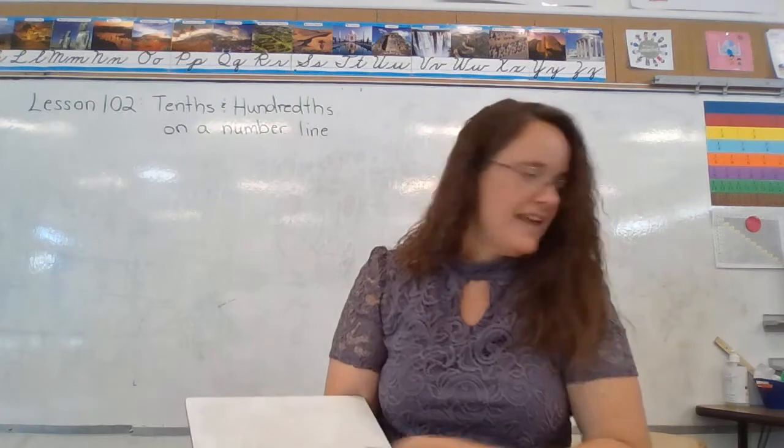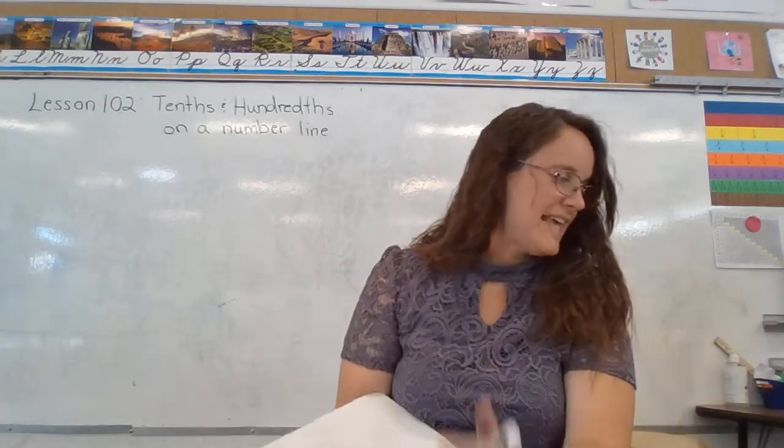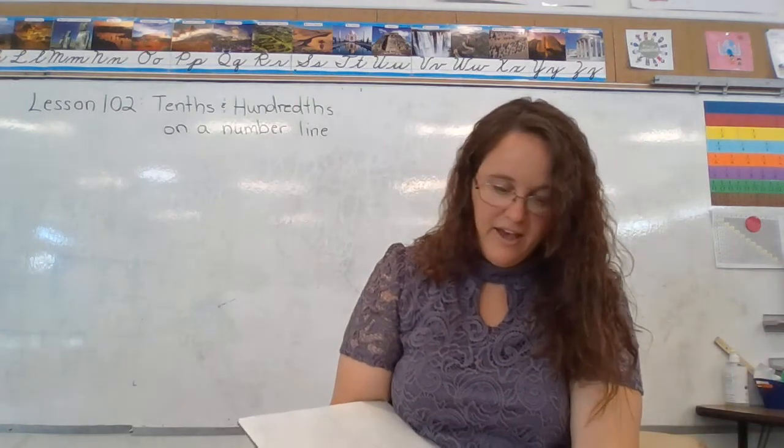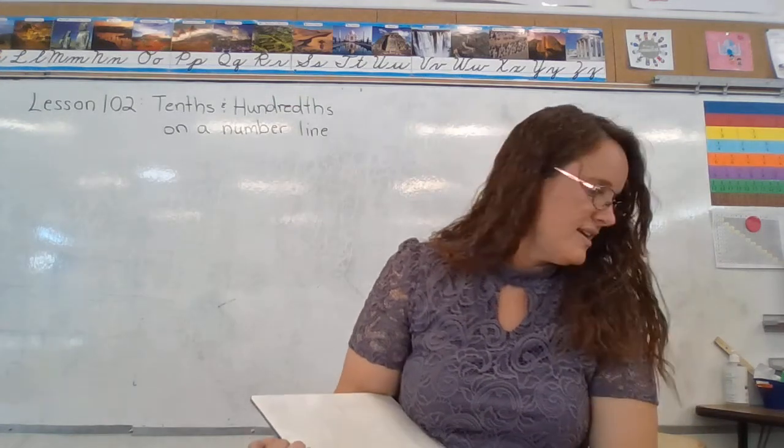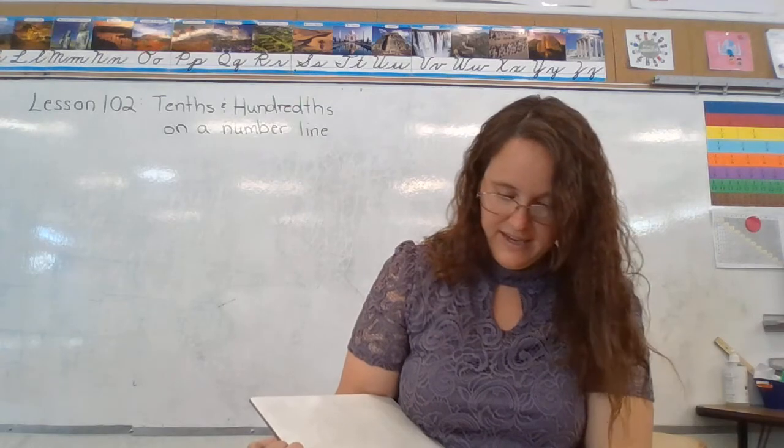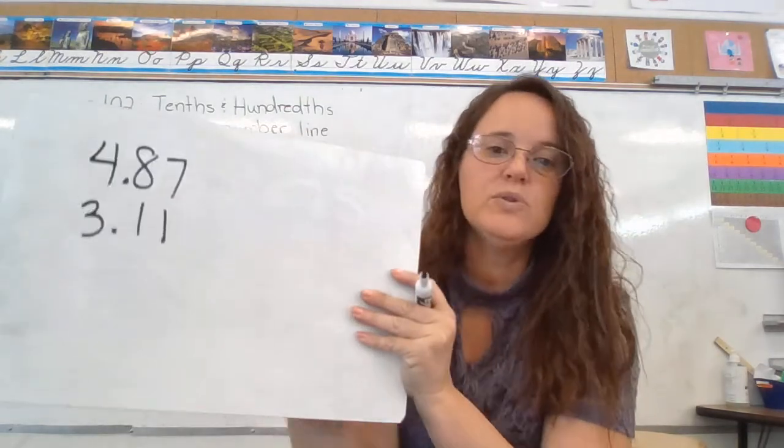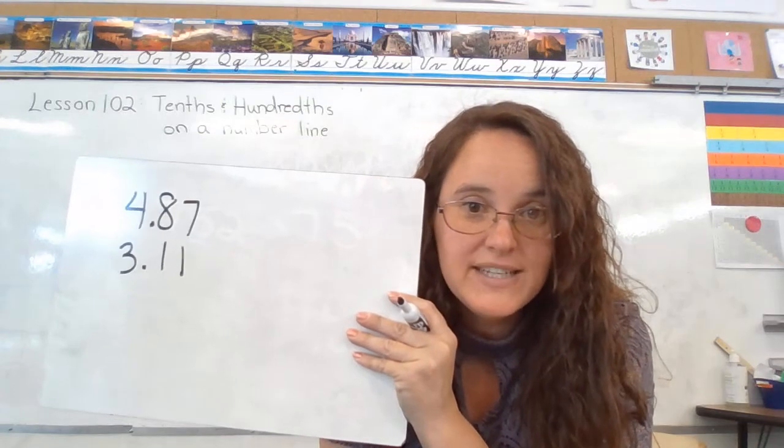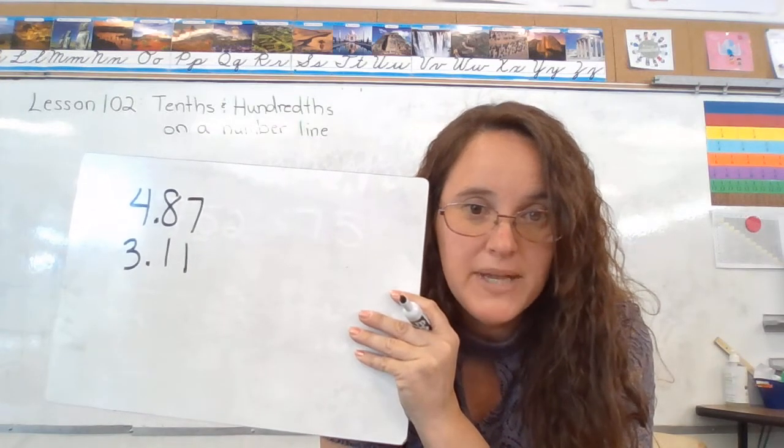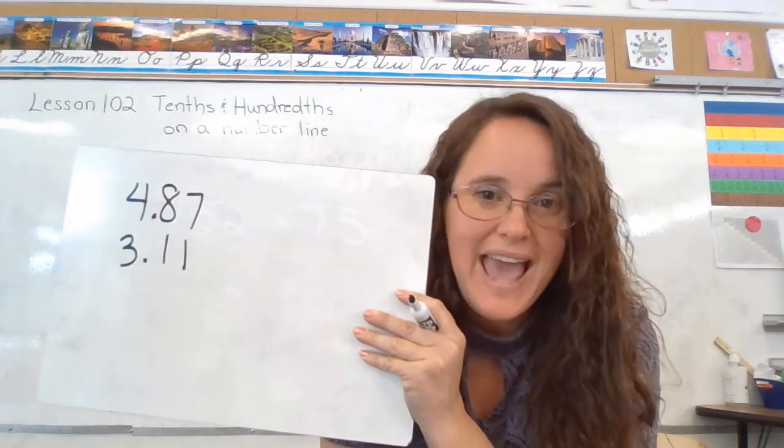Alright, the next problem, example four, says estimate the sum of 4 and 87 hundredths and 3 and 11 hundredths to the nearest whole number. To solve this, we need to know that finding a sum means we add.